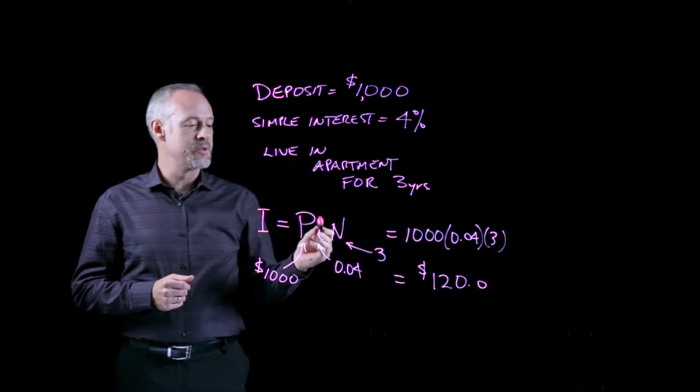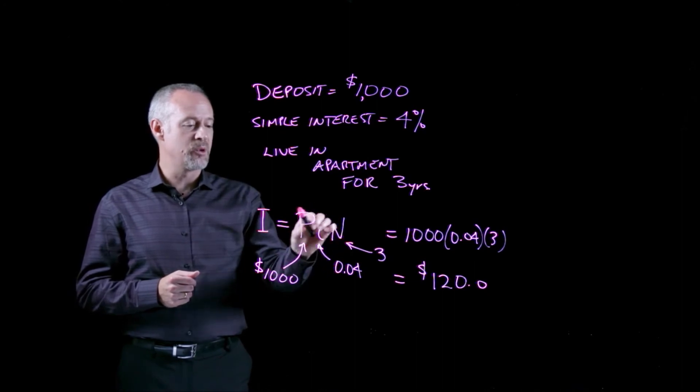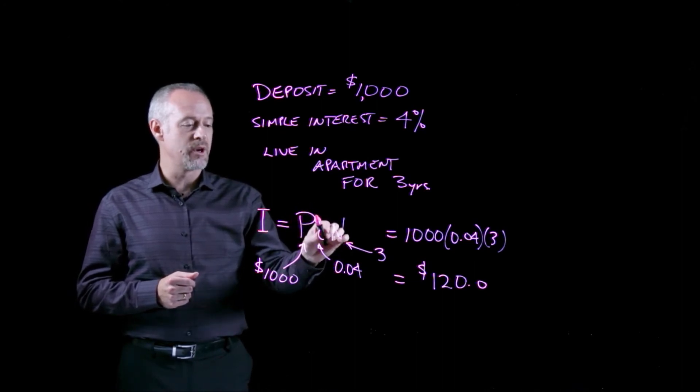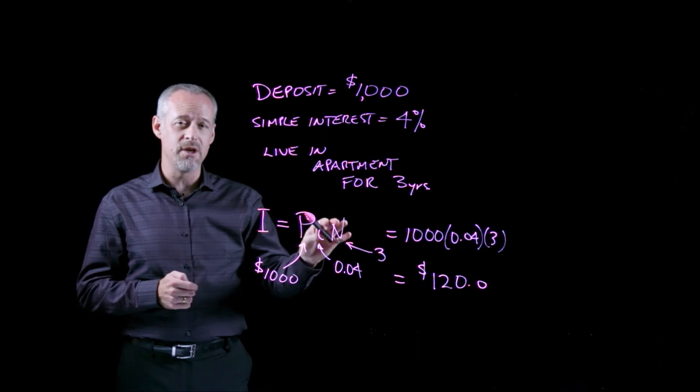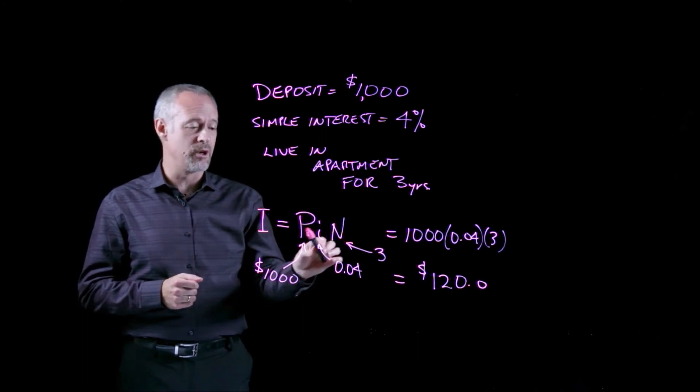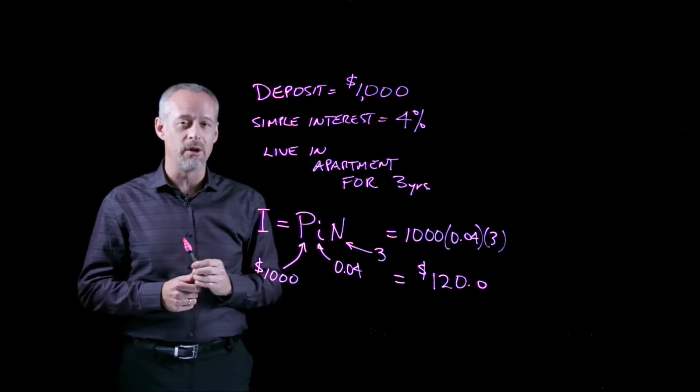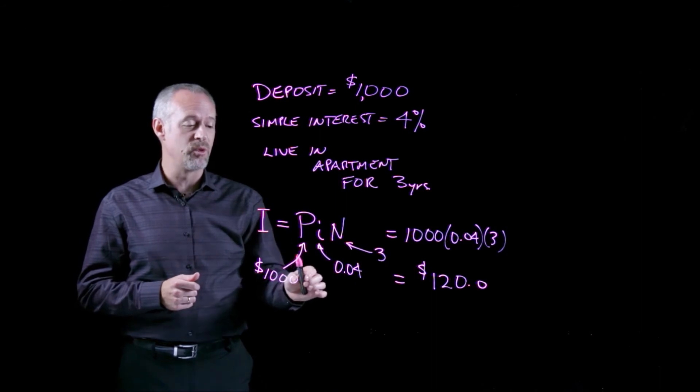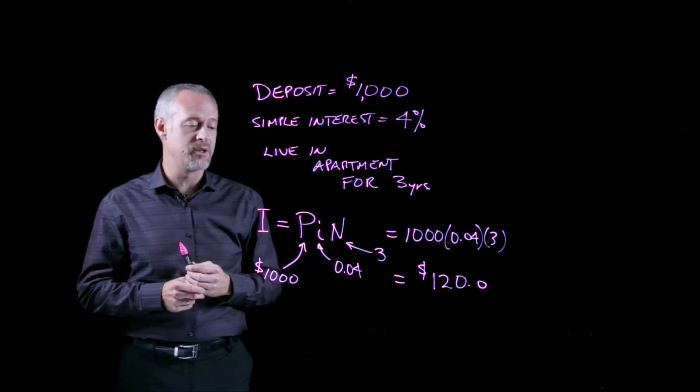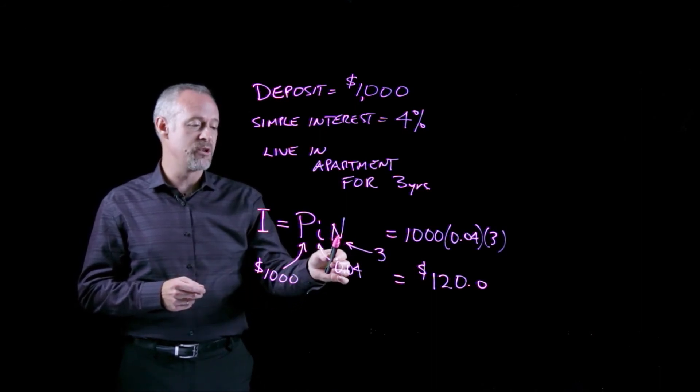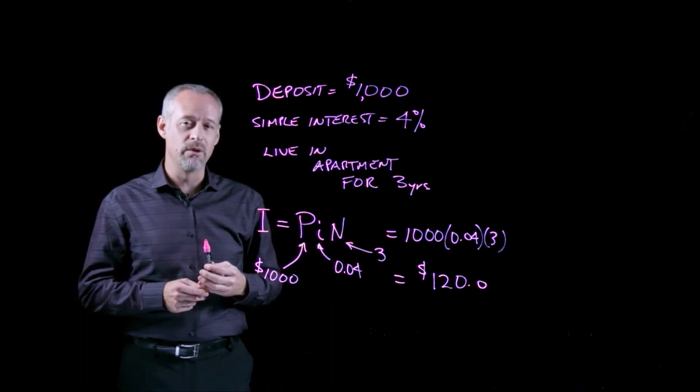So you see what happens in simple interest. We have simply the principal amount times the interest rate. And if this was only one year, if you only stayed in the apartment for one year, the landlord would owe you $40 on your rent deposit. But since we stay for three years, we simply multiply the amount of the yearly simple interest by the number of years.